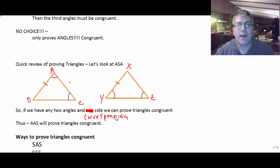Of course, the non-included side has to be a corresponding side. So if we have any two angles and a corresponding side congruent to two triangles, we can prove the triangles congruent. And we call this angle-angle-side. So angle-angle-side will prove two triangles congruent.